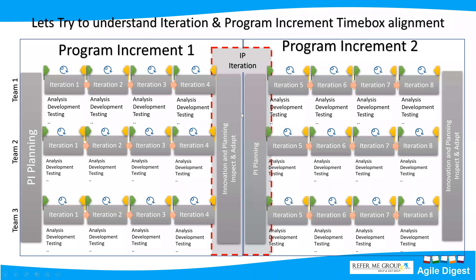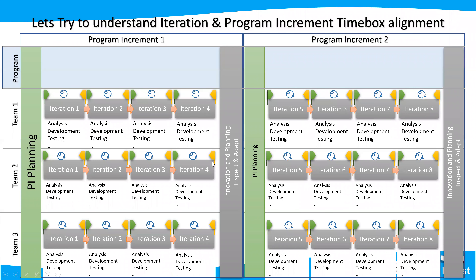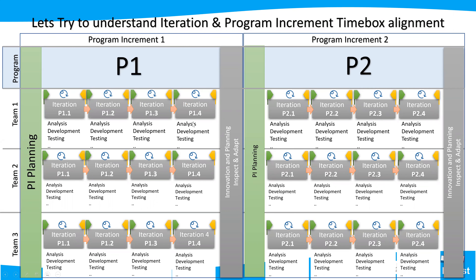Within a program, a Program Increment is executed, and at the team level we have iterations 1, 2, 3, 4, then innovations and planning. Teams commonly name iterations using a convention like P1.1, P1.2, P1.3, P1.4 for PI 1, then P2.1, P2.2 and so on for PI 2. All teams follow the same naming convention for the same duration — that's the common naming approach.